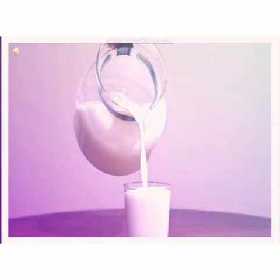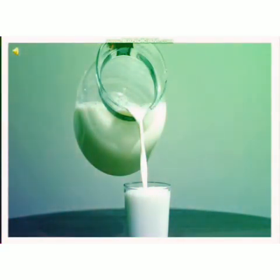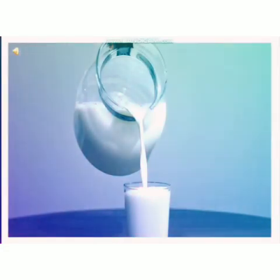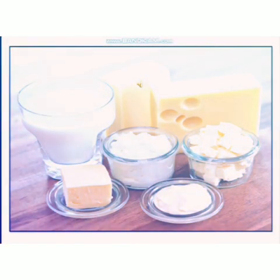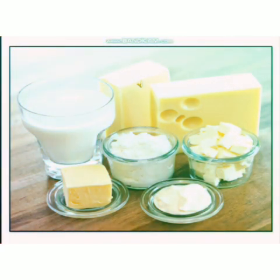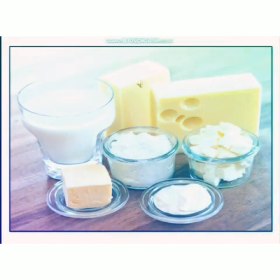The main food item we obtain from animals is milk. Milk is considered the most important because from milk we obtain a variety of milk products — like curd, ghee, butter, and cheese, among others.